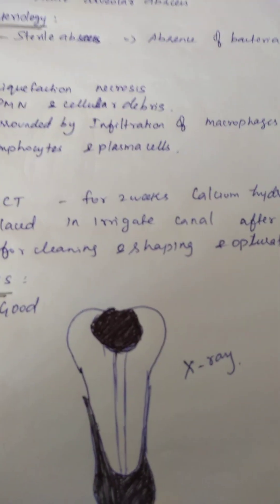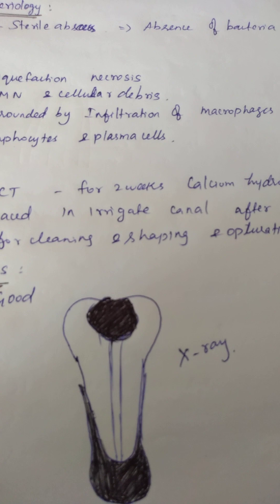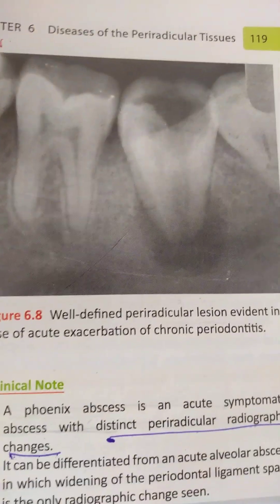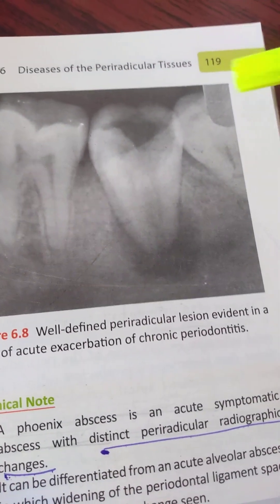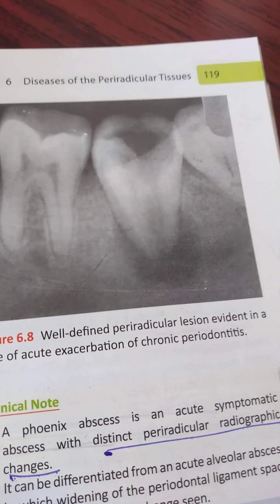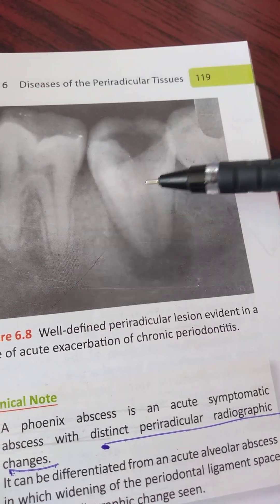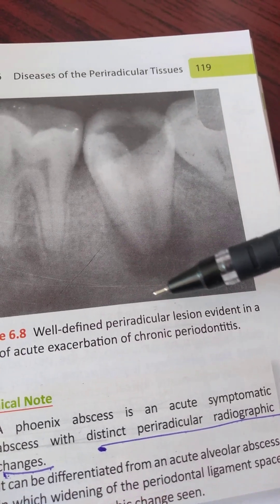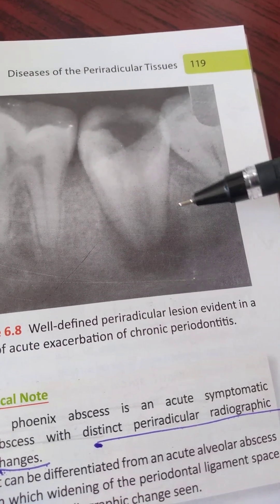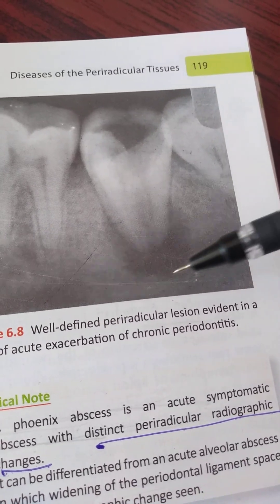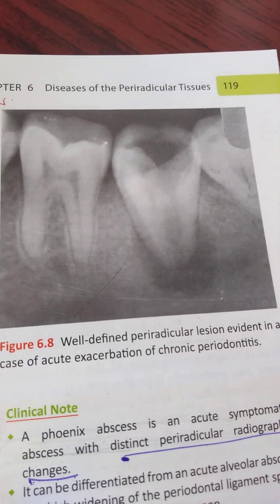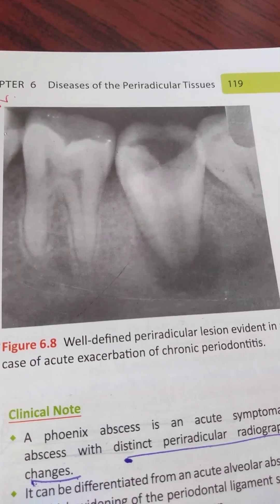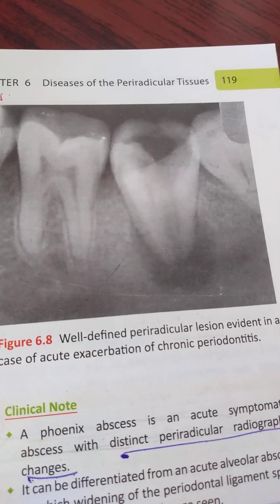This is the X-ray appearance. We see dental caries involving the pulp, with a well-defined radiolucency in the apical region, showing acute exacerbation of chronic apical periodontitis. That is the X-ray appearance.